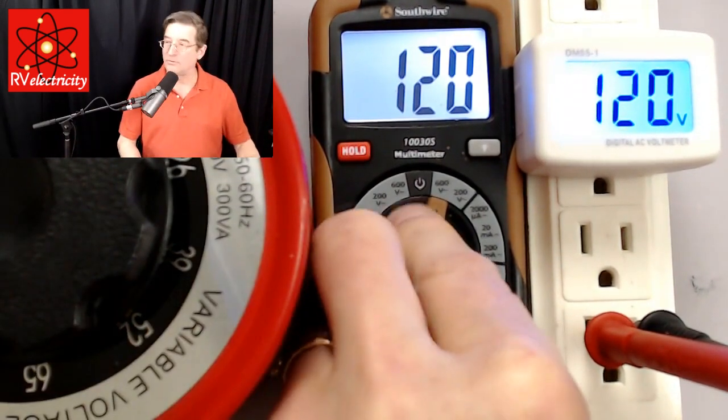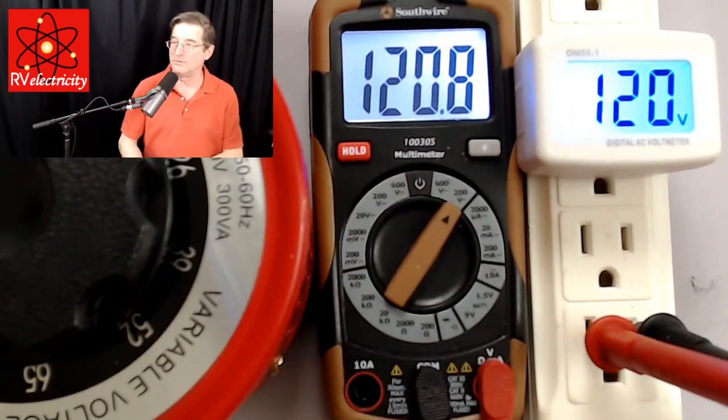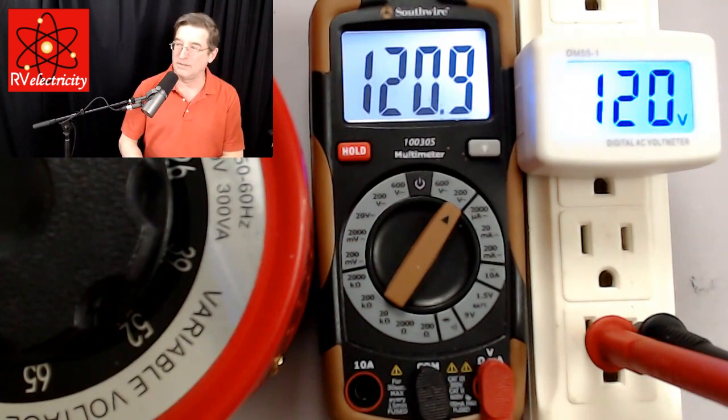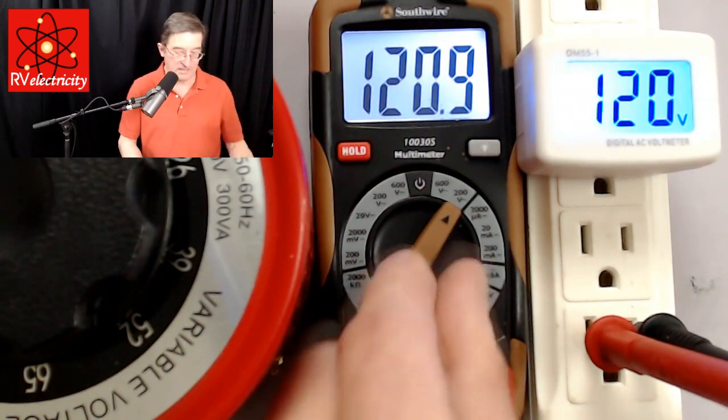If we wanted to know the exact voltage we could turn this over to the 200 volt range and we could see we're at 120.8, 0.9 volts. Again, it doesn't matter.